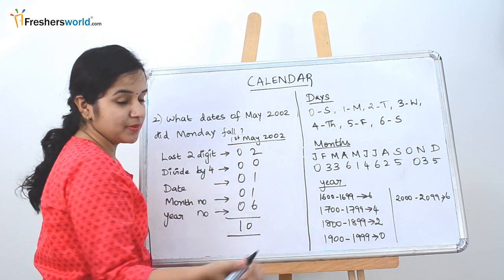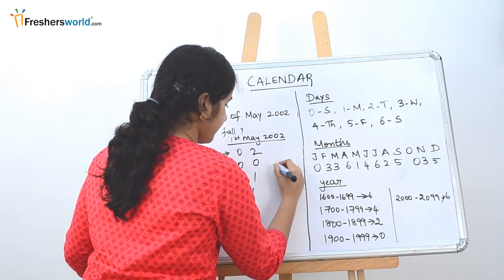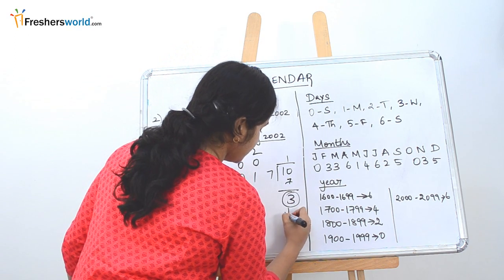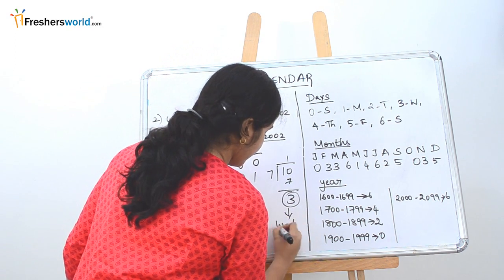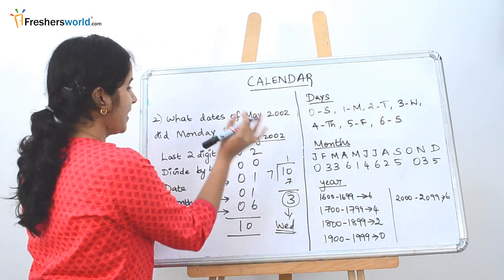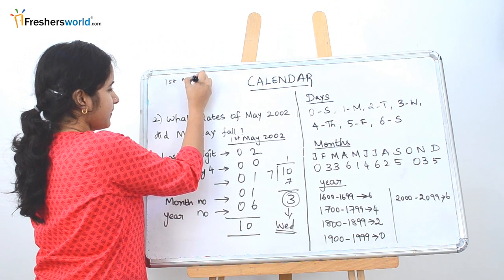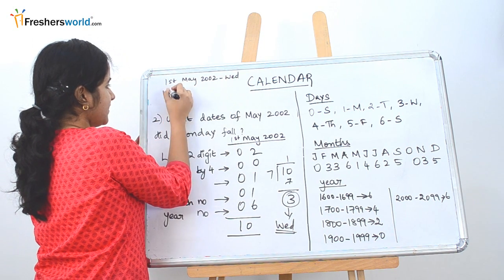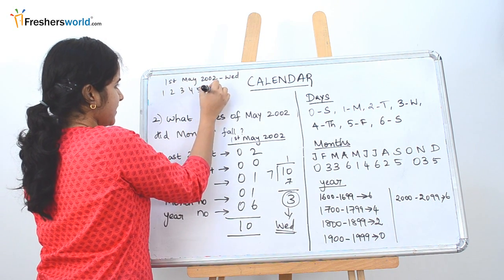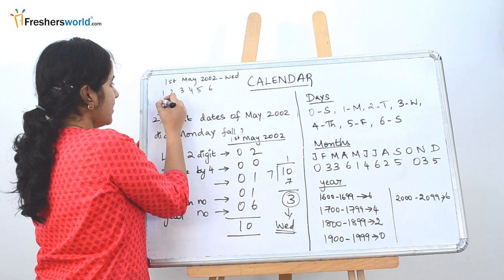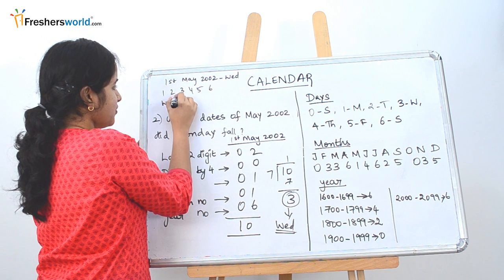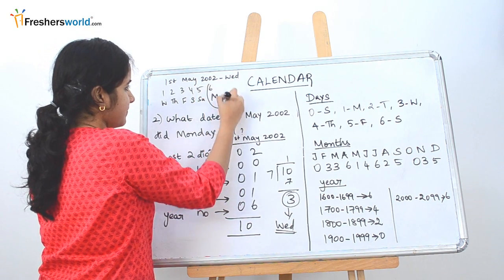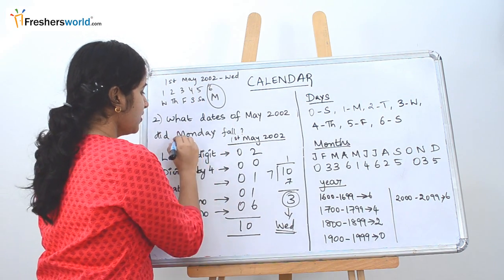So what do we do similarly? We have to divide it by 7. So reminder is 3. So 3 is nothing but we know it's Wednesday. So 1st May 2002 falls on a Wednesday. So 1st, 2nd, 3rd, 4th, 5th, 6th for example. So 1st falls on a Wednesday, 2 is on Thursday, 3 is on Friday, Saturday, Sunday and 6th is on Monday.